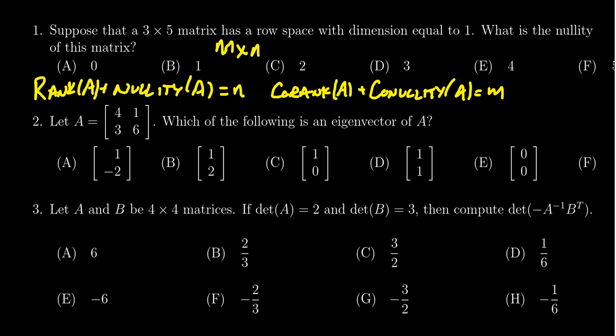When we put these together, what we need to find is the nullity of the matrix. What we're given is the co-rank. So we know the dimension of the row space. We know this is equal to one.